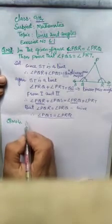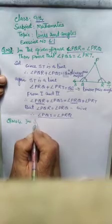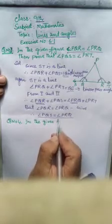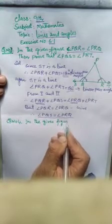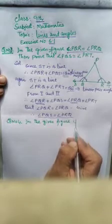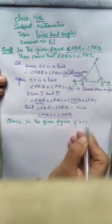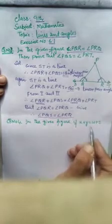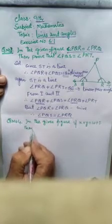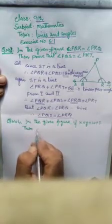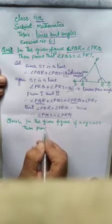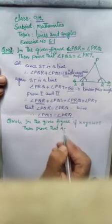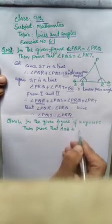Question number 4: In the given figure, if x plus y equals w plus z, then prove that AOB is a line.